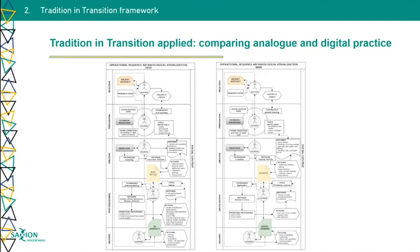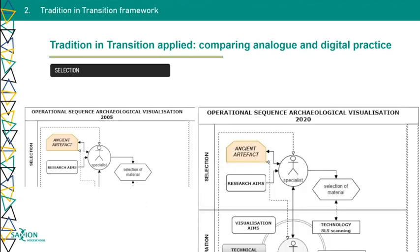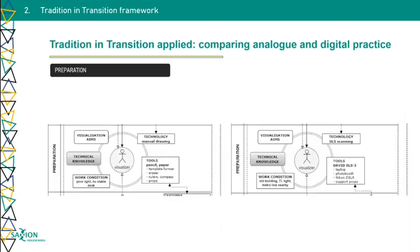To the left you see current practice with digital tools, and to the right the scheme of production of an analog pottery drawing. At first, in the selection procedure, not really much has changed — the selection still depends on research aims and the selection of material. Although you can see at the bottom right that the technology really affects the selection of material, which wasn't really the case with analog drawing. In the second stage, the preparation phase, choices haven't changed much — working conditions and poor light still affect 3D scanning as well. The tools may have changed, but we still have to make choices, and we have more choice now.